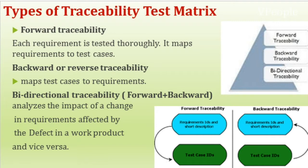Forward traceability is used to check whether the project progresses in the desired direction and towards the right product. It makes sure that each requirement is applied to the product and tested thoroughly. Backward traceability is used to ensure the current product remains on the right track — verifying that we are not expanding the project by adding code, design elements, tests, or other work not specified in the requirements. It also analyzes the impact of a change in requirements or defects in a work product.